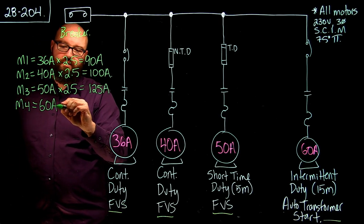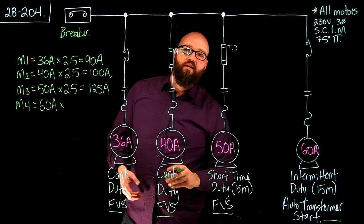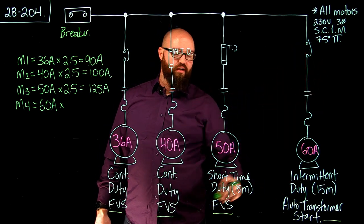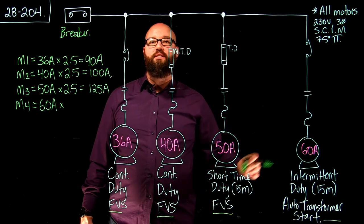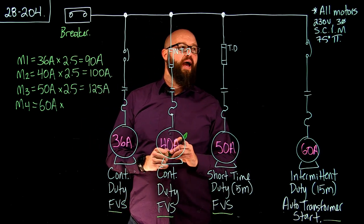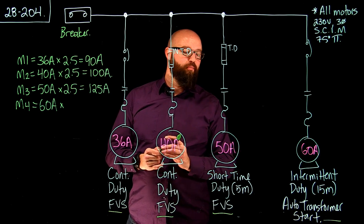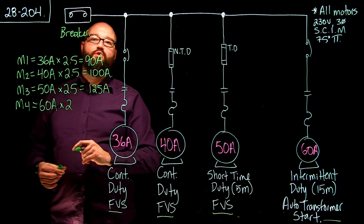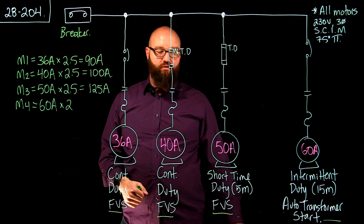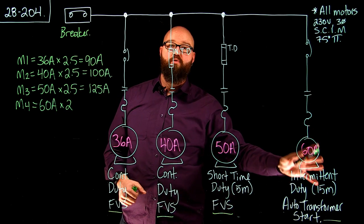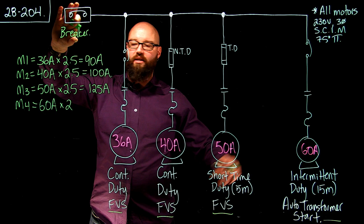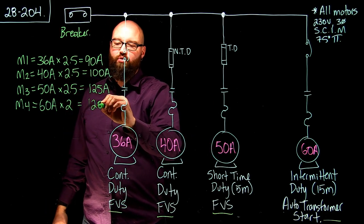Motor 4 has an FLA of 60 amps. When we go to Table 29, we look for our squirrel cage induction motor, but it's no longer a full voltage start — we have an auto-transformer start. We go down that column until we find the auto-transformer start entry, and we find that for over 30 amps, we have a multiplier of 200%. So for a breaker with an auto-transformer start, our multiplier is 200%, and 60 amps times 2.0 gives us 120 amps.